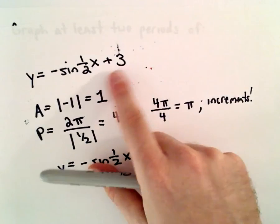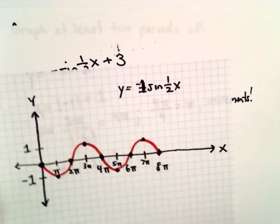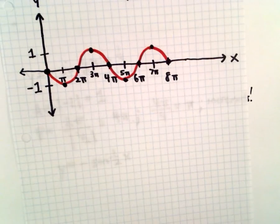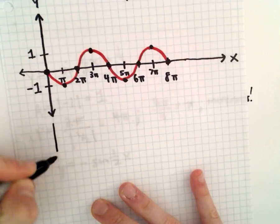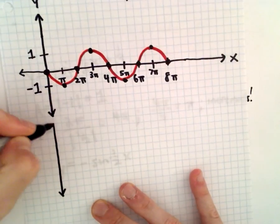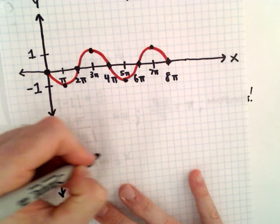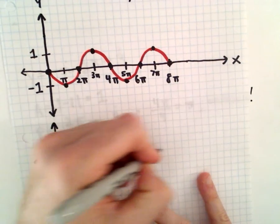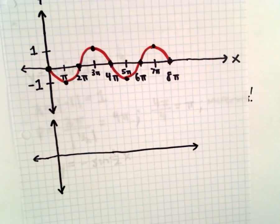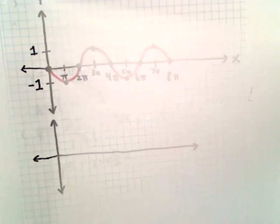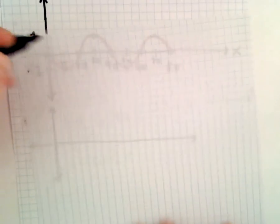So to simply get the graph that we want, all we have to do is make a vertical shift of three units. So that just means everything is going to get shifted up by three units. I probably should have given myself a little more room there. Let's try this one more time, give myself a little bit more space.